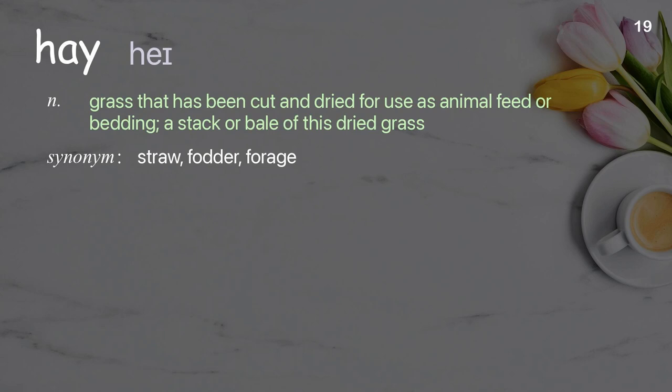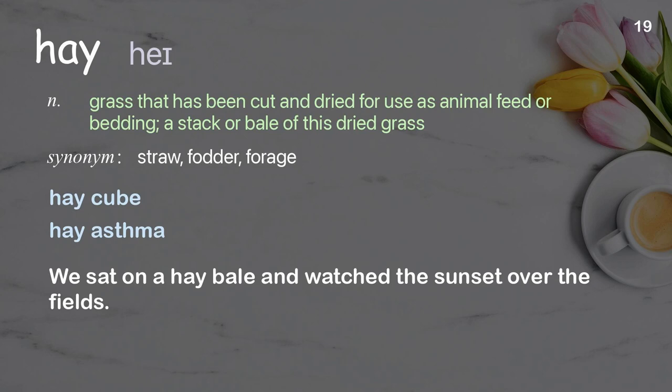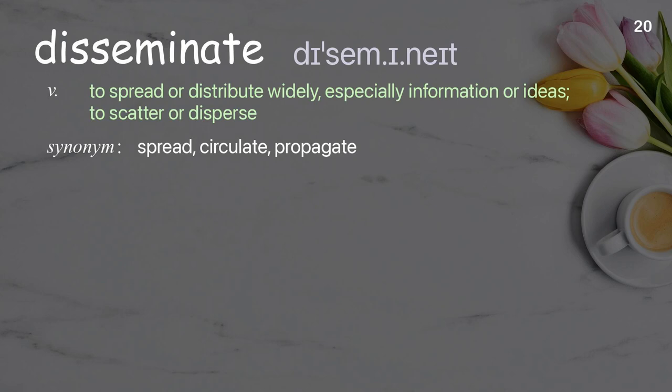Hay: Grass that has been cut and dried for use as animal feed or bedding; a stack or bale of this dried grass. Examples: hay cube, hay asthma. We sat on a hay bale and watched the sunset over the fields.